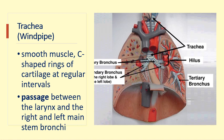The trachea, or windpipe, is a smooth muscle composed of C-shaped rings of cartilage at regular intervals. It acts as the passage between the larynx and the right and left main stem bronchi. It enters the lungs through the anatomical location referred to as the hilum.